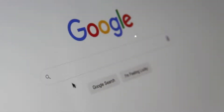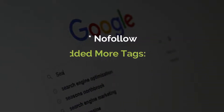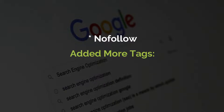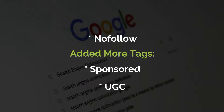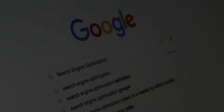Besides a simple nofollow tag, did you know that Google introduced even more tags? In 2019, Google introduced new link attributes for sponsored and user-generated content, or UGC, links. These new attributes still tell Google to ignore the link when ranking a page, but they provide more information to the search engine to better understand the link.